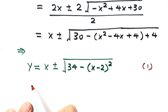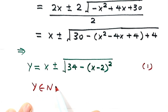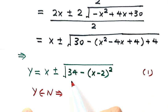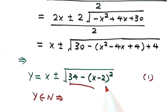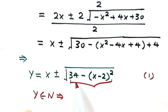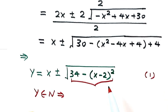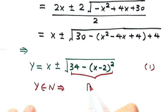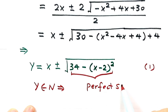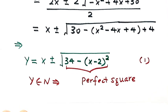Since y is a positive integer, that means the part under the square root — 34 minus (x − 2)² — must be a perfect square. Now let's narrow down the range of x for which the part under the square root is a perfect square.